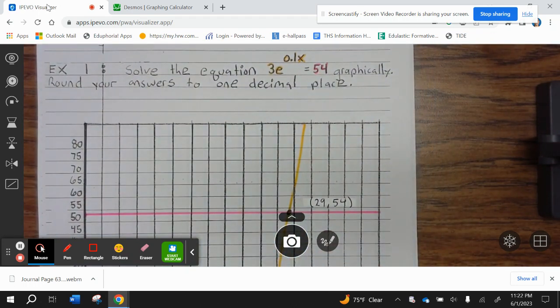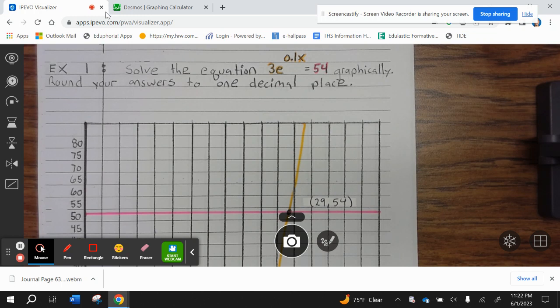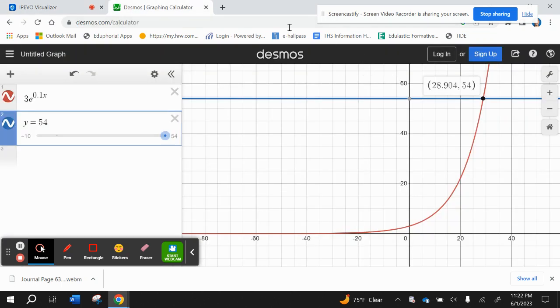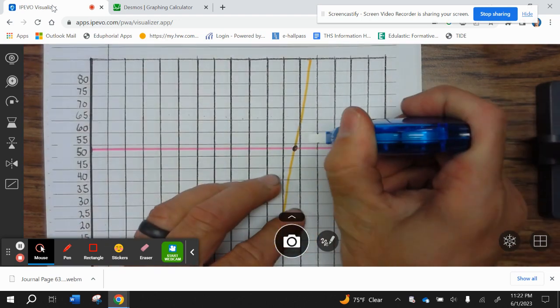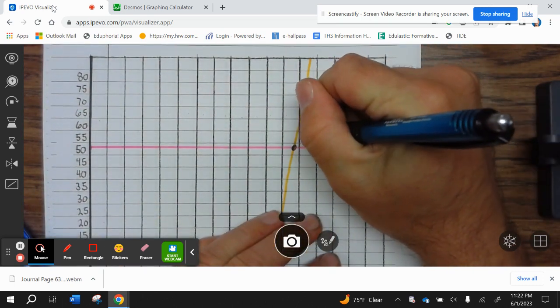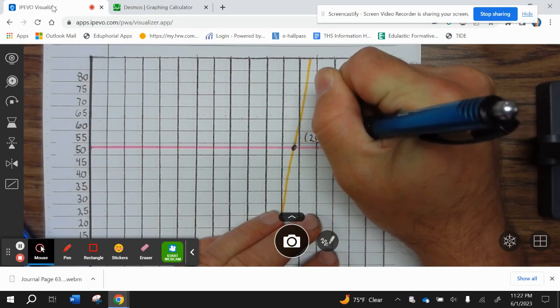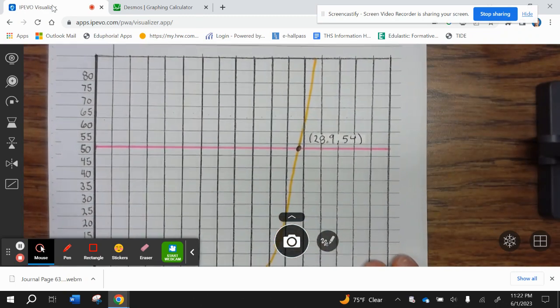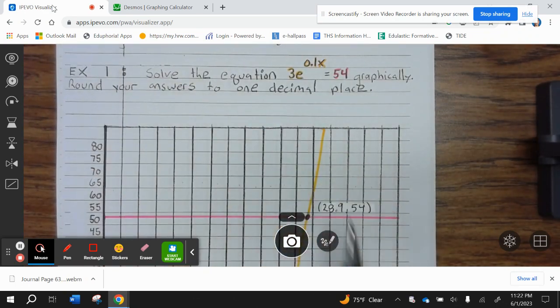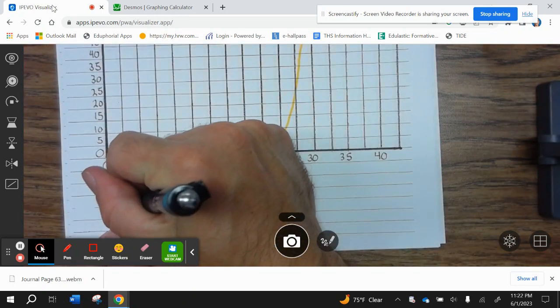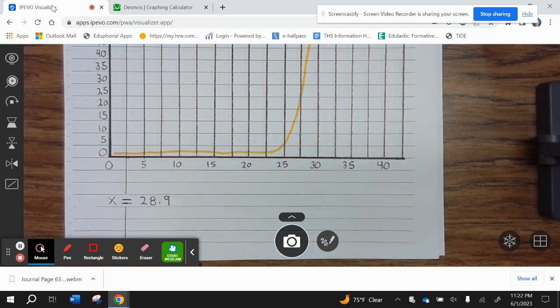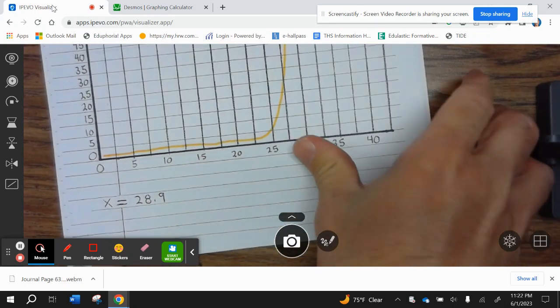And then, x equals 29. And I'm sorry, it says one decimal place. Let me go back. 28.9. Easy fix. Lesson of always reading instructions right there. So x equals 28.9. Let's take a look at the next example.